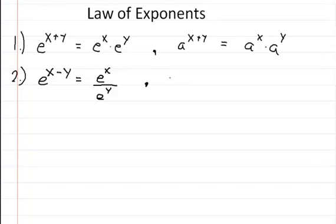And if you have it with a constant, so like b to the x minus y, you can rewrite that as b to the x divided by b to the y.